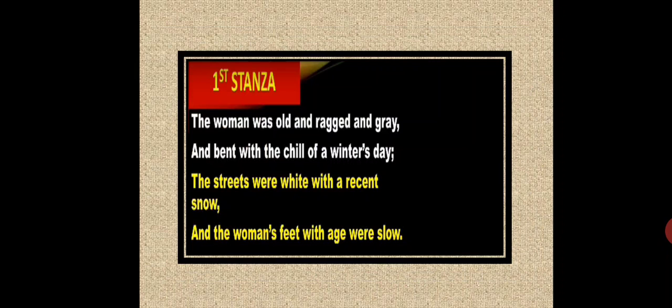Her feet were very slow because she was very much afraid of falling. So hope you get the first stanza and the scene: it's winter time, snow was falling, and the old lady was standing alone — very old, ragged, and with weak legs. The rhyming words in this stanza are: grey/day and snow/slope.